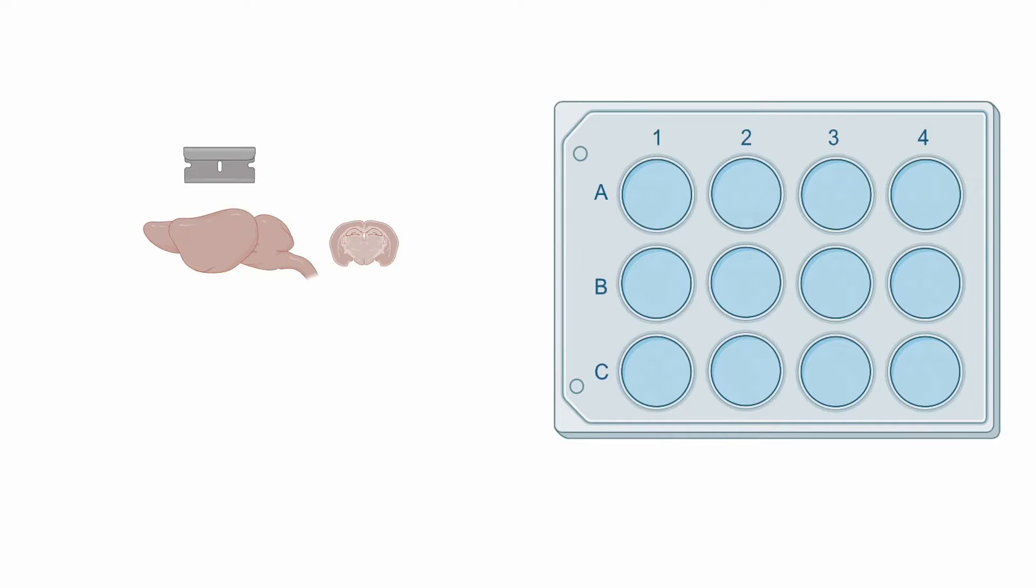A vibratome, or vibrating microtome, is an instrument that can cut extremely thin sections of tissue with high precision and accuracy by using a vibrating razor blade.